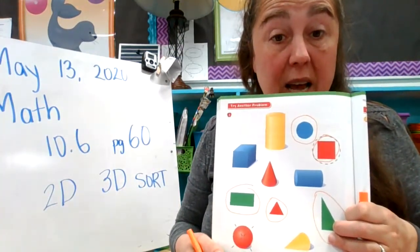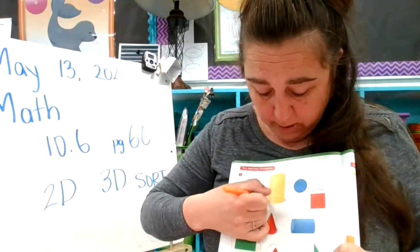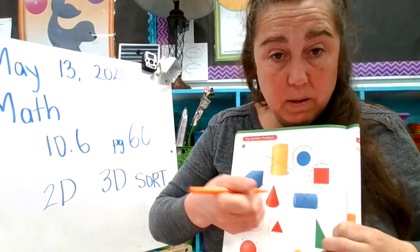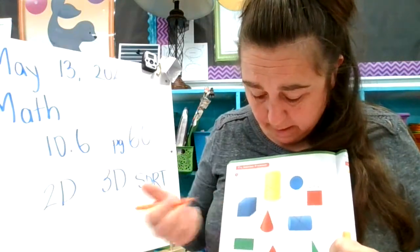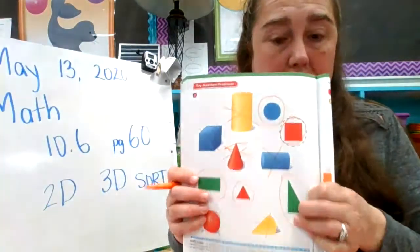So now we're going to put an X on all the three-dimensional shapes. A cylinder is three-dimensional. A cylinder is three-dimensional. A cone is three-dimensional. Oh, my X is not very good there. My goodness. Three-dimensional and three-dimensional, just like so.